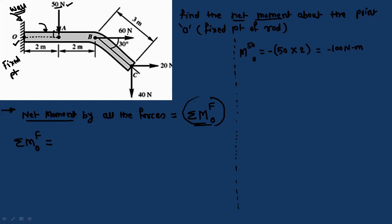The second force is 60N. The point B lies exactly along point O, so the line of action of 60N passes through O. Therefore the perpendicular distance is 0, and moment by 60N about O = 60 × 0 = 0.